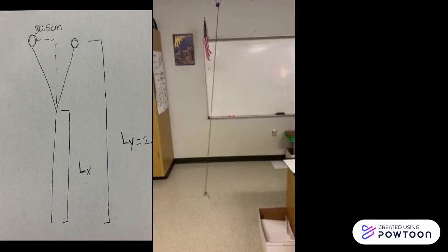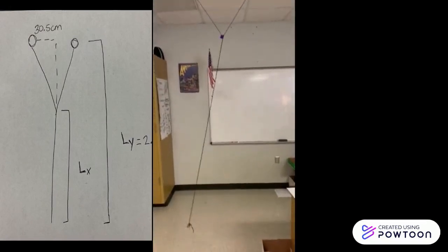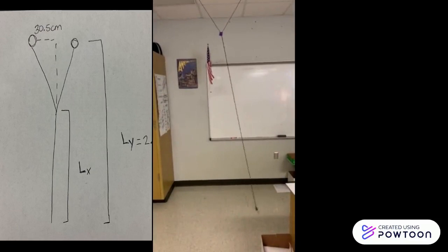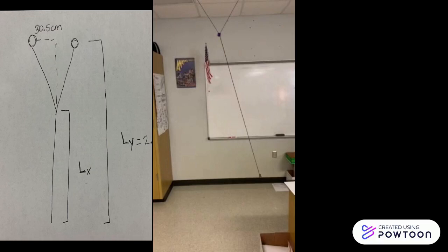In order to create a pendulum that swings both in the x and y direction, we need to look up the width of a ceiling tile. One of the ceiling tiles has a width of 61 centimeters, or 30.5 if you go halfway across. We also looked up from the top of the ceiling to the bottom of the floor and took off about 20 centimeters. That way, we can get our L of Y.